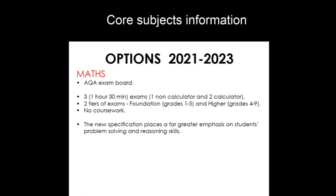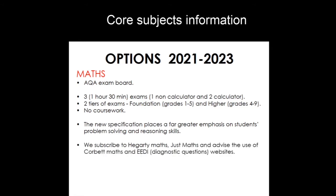The foundation and higher papers are split — you can get a grade 1 to 5 on the foundation, or 4 to 9 on the higher. The new specification continues the mastery approach taught at Key Stage 2 and Key Stage 3, with the main aim of improving mathematical fluency and students' problem solving and reasoning skills. We've adapted our schemes of work to ensure students are prepared for these types of questions and allocated extra time to revisit topics taught during lockdown to plug any gaps.